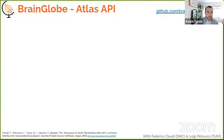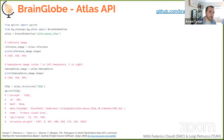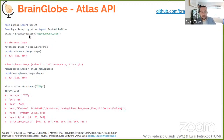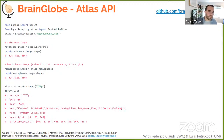The BrainGlobe Atlas API packages different brain atlases at different resolutions from different species in a standardized way. Rather than loading specific files from disk, you instantiate a Python BrainGlobe Atlas class and specify which atlas you want — for example, the Allen Mouse Brain Atlas at 25 micron resolution, or the Max Planck Institute normal zebrafish atlas at 1 micron. From this class you can access the reference image, annotations image, meshes for 3D visualization, and query metadata like which brain region a given coordinate falls in.